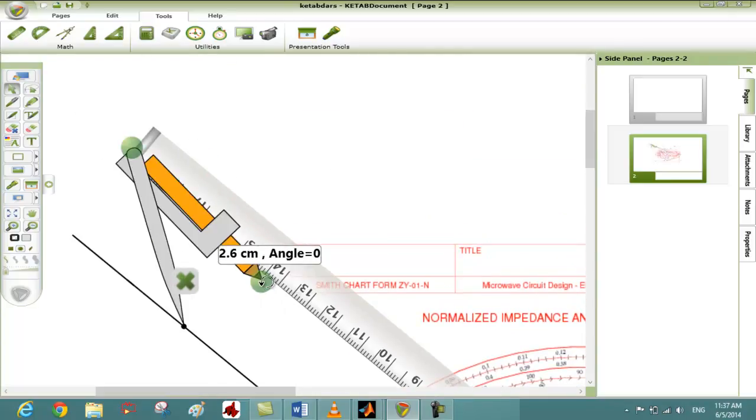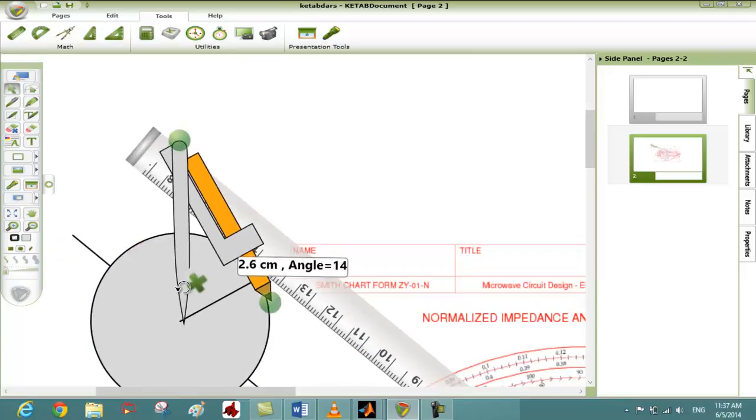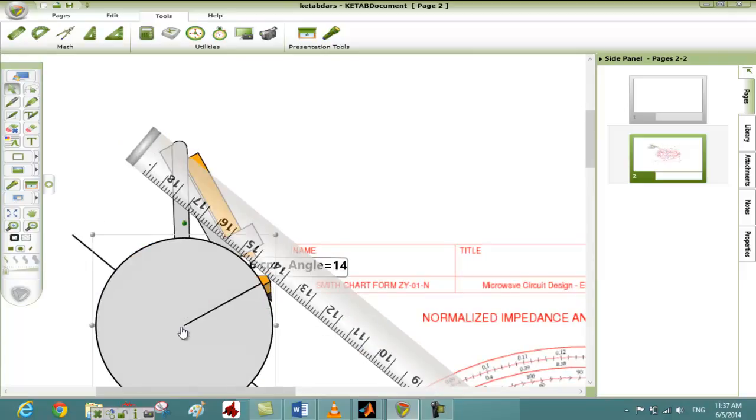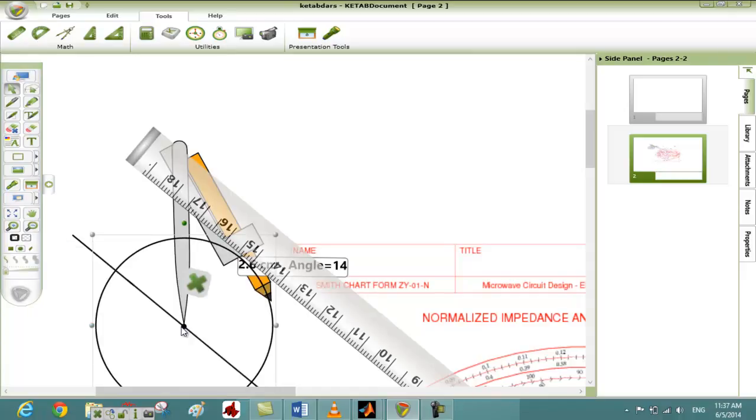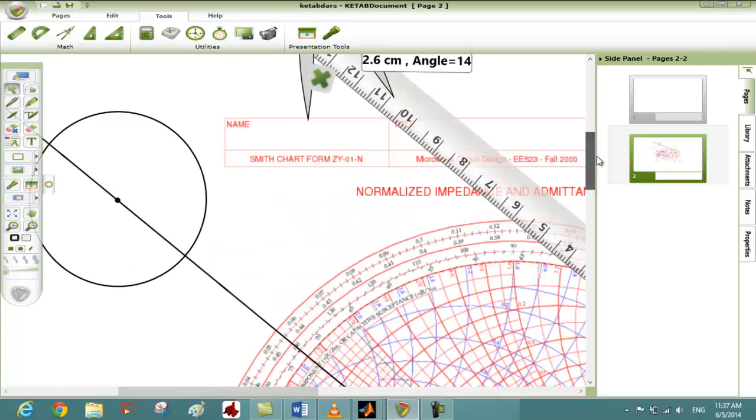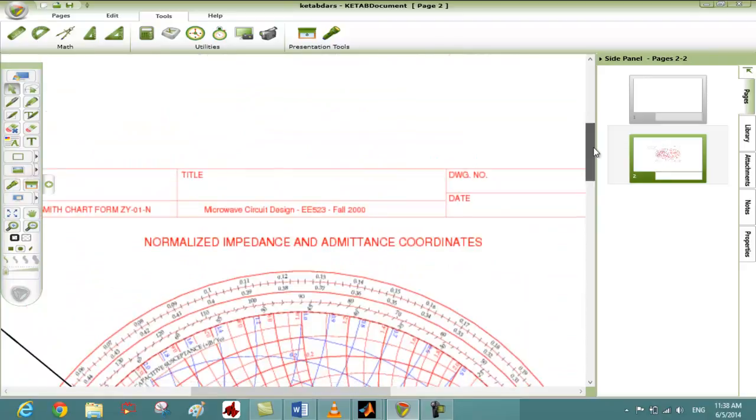And draw the circle. Change the background of the circle so it can be transparent and this is our input stability circle. Remove the ruler, remove the compass, remove the point drawn.